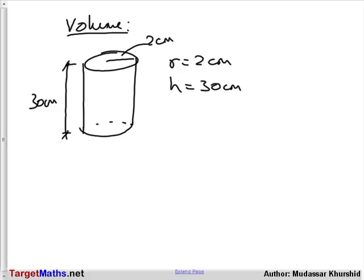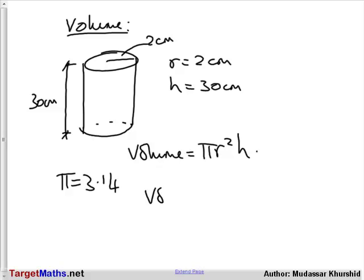Okay, to work out the volume of the cylinder, the formula is volume equals πr²h. So, this becomes very easy to do now. Remember, take π as 3.14. So, volume equals 3.14 times 2 squared times 30.